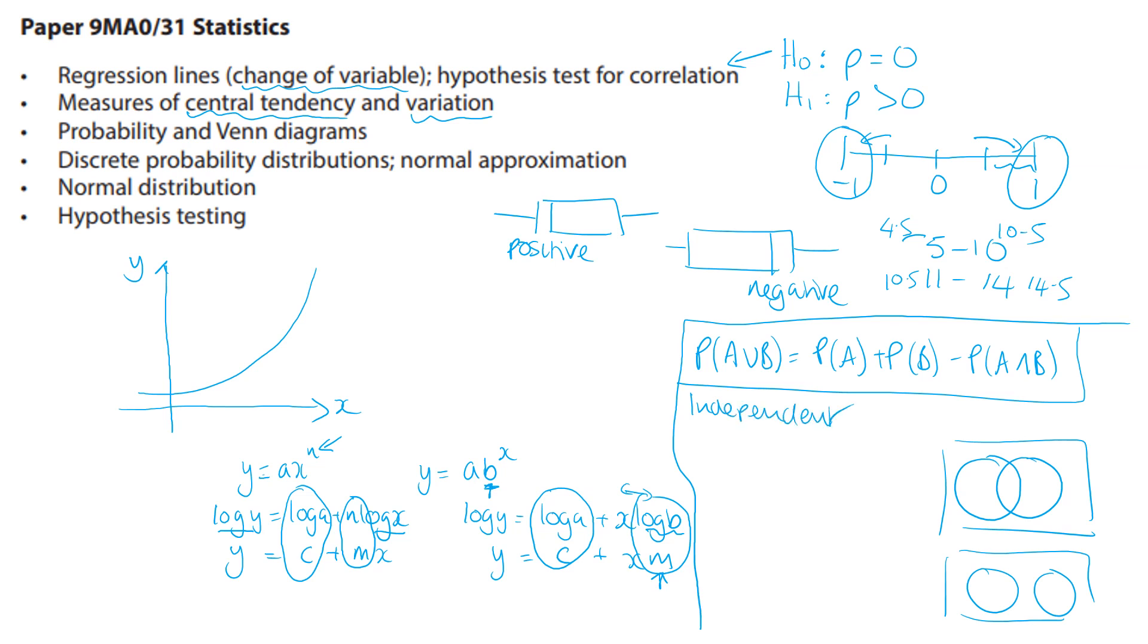Independent events: then the rules are that the probability of A times the probability of B is equal to the probability of A intersection B. And the other one is the probability of A given B is equal to the probability of A. The fact that you've given B's happened has no influence because the events are independent, so it's just equal to the probability of A.